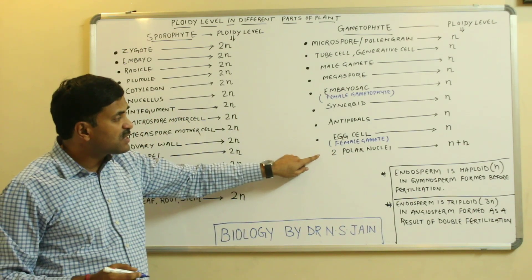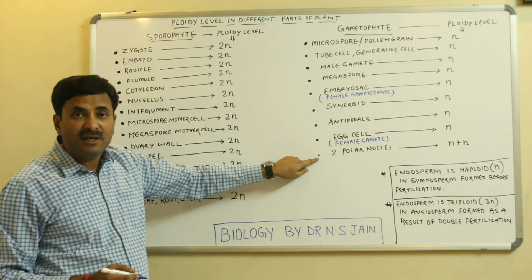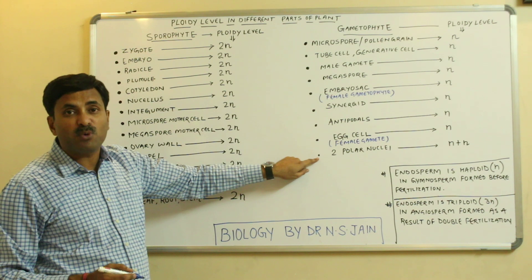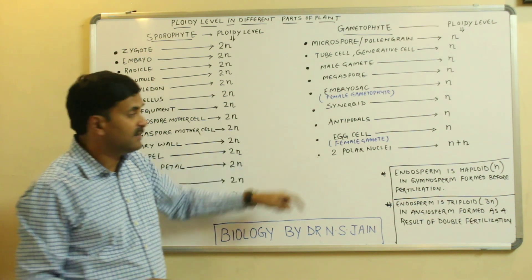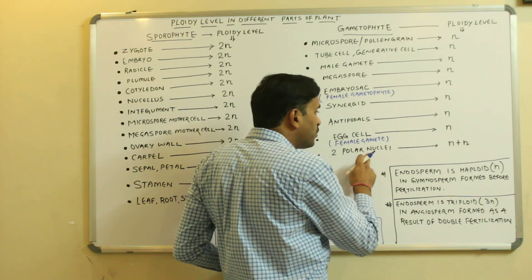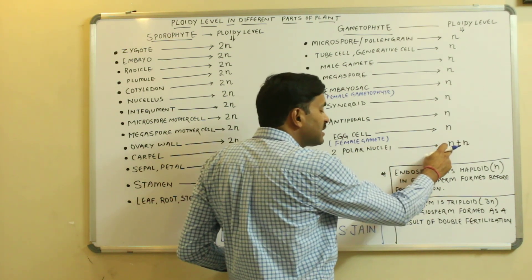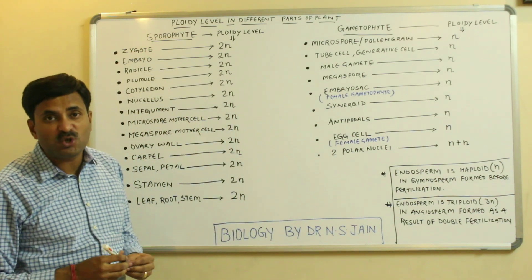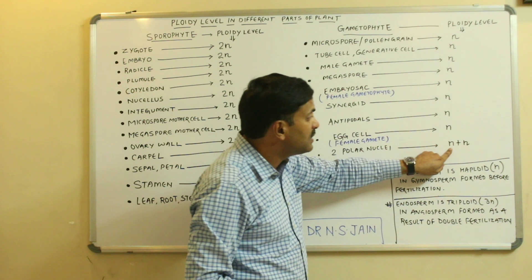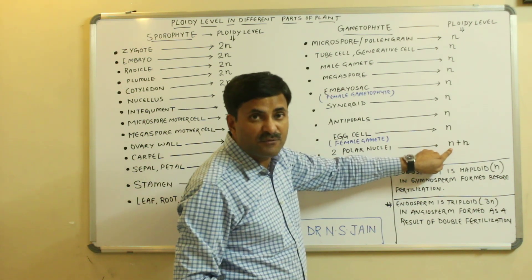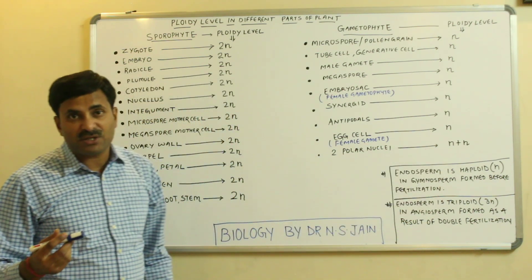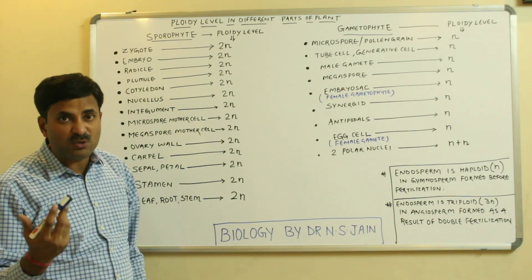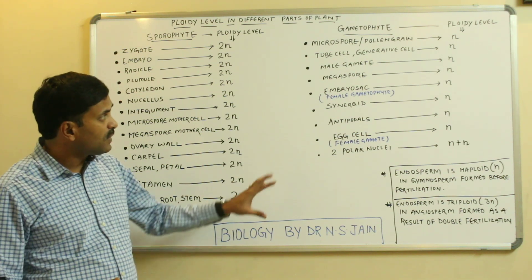If we see the structure of the embryo sac, at the center two polar nuclei are present, and each polar nucleus has a ploidy level of N. But just before fertilization in the case of angiosperms, these two polar nuclei fuse together to form a diploid structure known as the secondary nucleus — a 2N structure is formed.